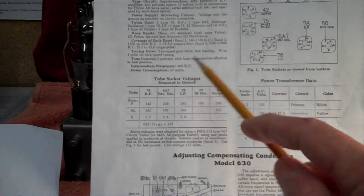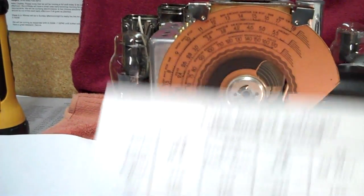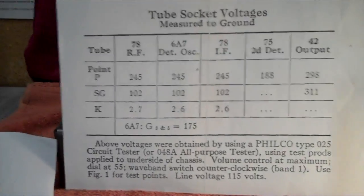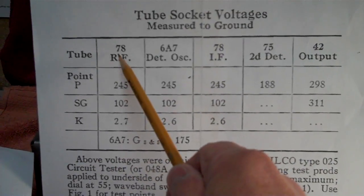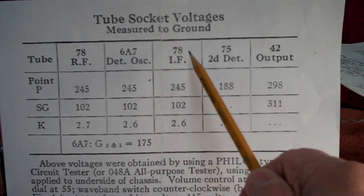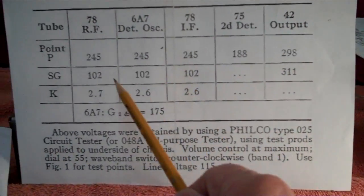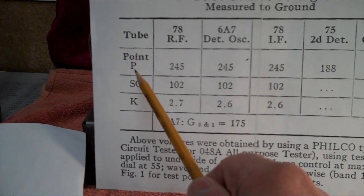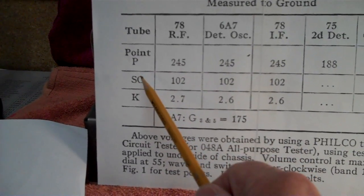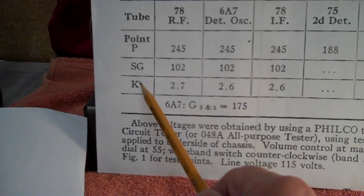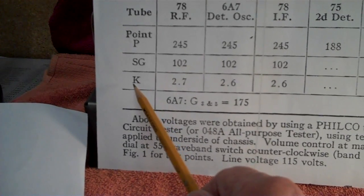Now, that's a little difficult to read, so I went ahead and blew it up. This is what it looks like. What we have is your 78 tube, 6A7 tube, 78, 75, and 42. And the tube point, this would be the plate P for plate, SG for screen grid, and the K for the cathode.